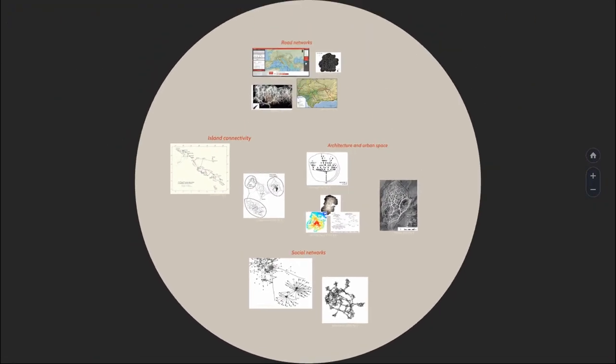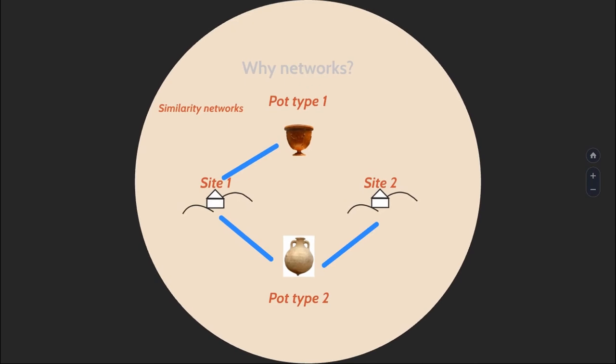Another big body of applications are similarity networks—representations of archaeological site assemblages and their similarities. Where we represent sites and the pottery or artifacts that are part of the assemblage, we draw a relationship between an artifact type if it's part of that assemblage. This to me is a good representation of the diversity of things we can do with network science—we can use it to represent very typical archaeological data and explore our data set in a different way.